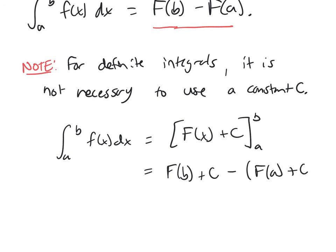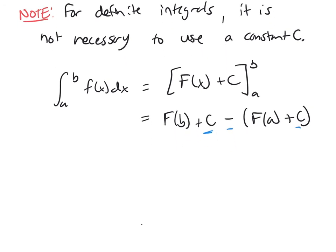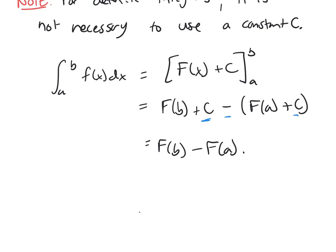and if you look, you have a c and a negative c because of this minus that's out in front. So they cancel and it's just going to be F of b minus F of a. So it's not necessary for definite integrals to write a plus c there because it gets cancelled away.